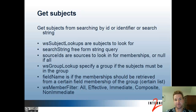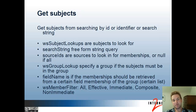The first operation we're going to talk about is Get Subjects. This operation lets you search by ID or identifier or search string, just like the Subject API, to look at subject information. You can pass in subject lookups with either the ID or identifier. A search string is for freeform string queries. You can put the source IDs you want to search, or null to search all. You can also filter by group lookup and specify direct, immediate, non-immediate, effective, or composite membership.